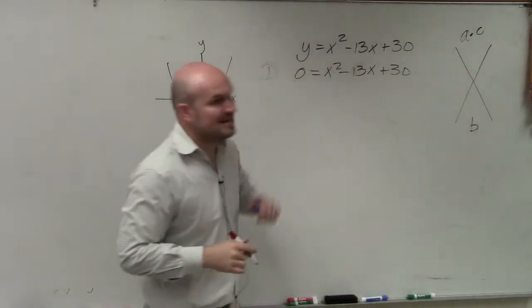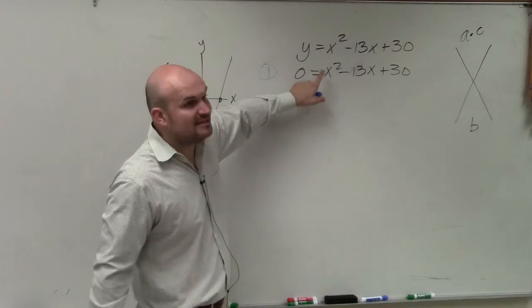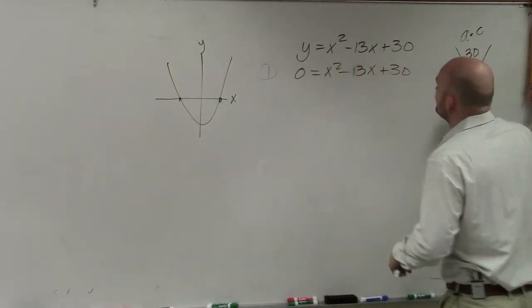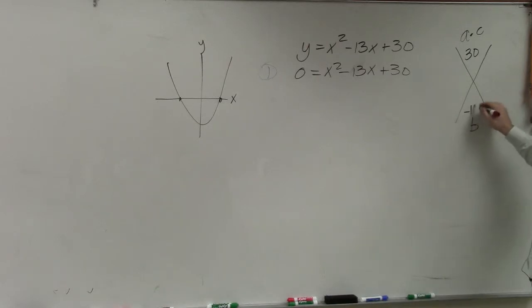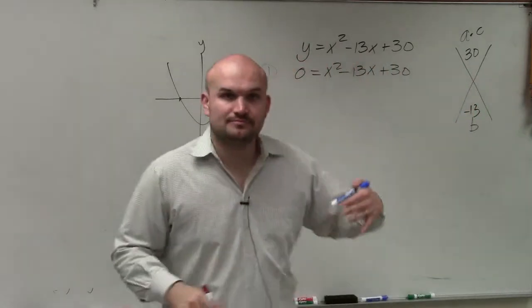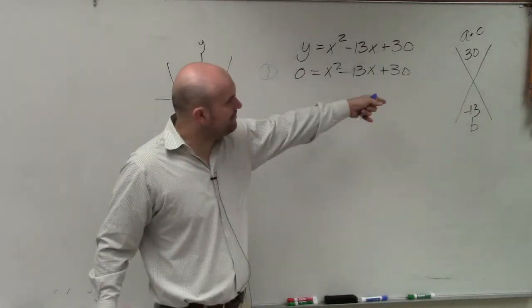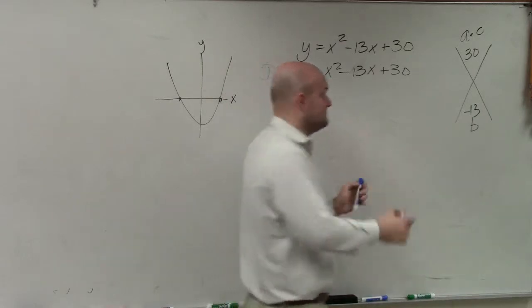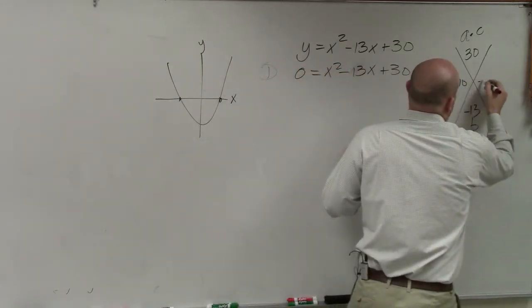So in this example, we did A times C and B. A times C, thankfully, A is 1 here. So 1 times 30 is 30, and B is negative 13. So now I need to identify what two numbers multiply to give me 30, but then add to give me negative 10 and negative 3.